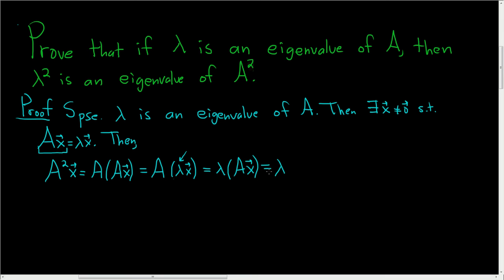And this is simply lambda, and then we can do it again. A x is equal to lambda x. So this is lambda x. And this is simply lambda squared x. So we have A squared x equal to lambda squared x.